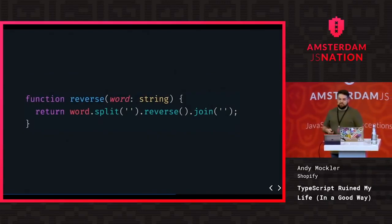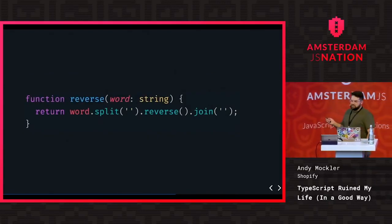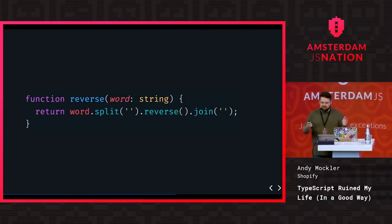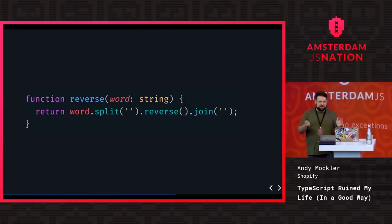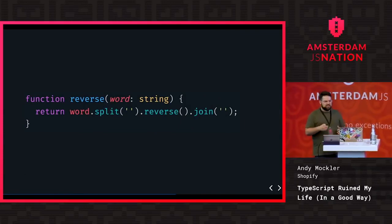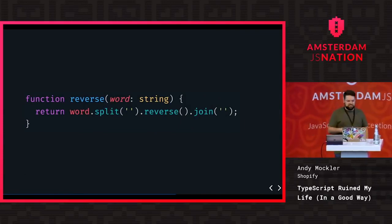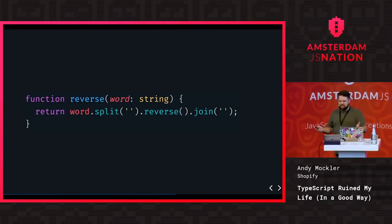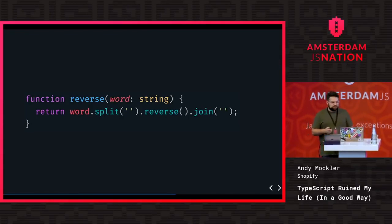TypeScript is a bit smarter than that. I try to write TypeScript as close to JavaScript as possible and only do the bare necessities so it looks pretty normal. Here, we can omit the return type because the compiler is able to infer it — it can see that join gives back a string, and it knows that's what the function will return.